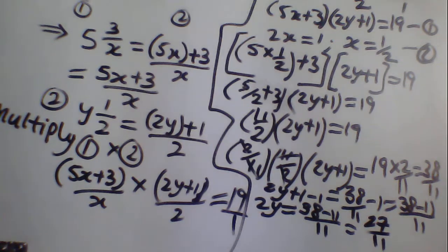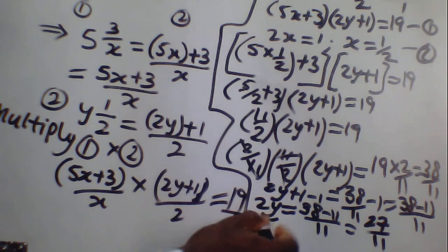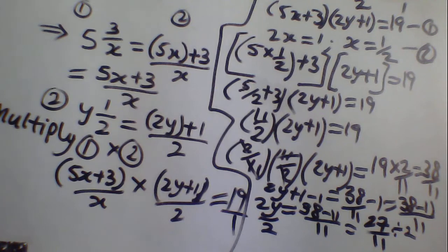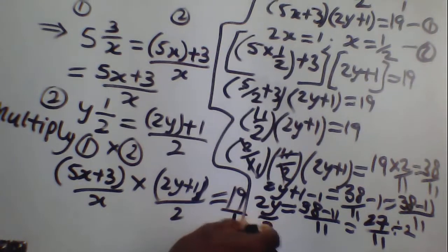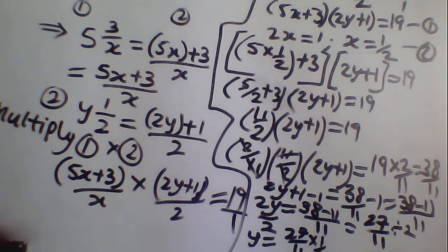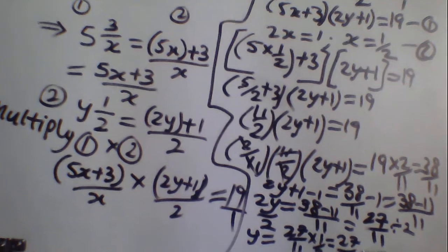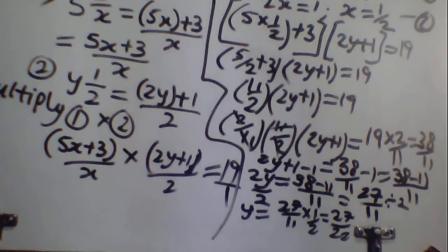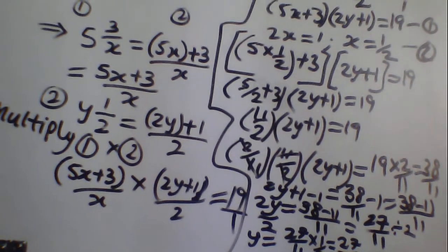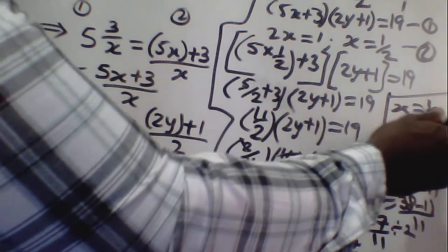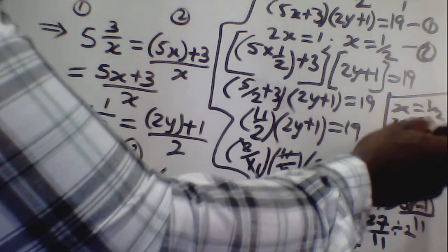Once you arrive at this point, you have almost solved it. Divide both sides by 2. So y will be equal to 27 over 11 times 1 over 2, which gives us 27 over 22. So y is equal to 27 over 22. These are the values of y and x — x is one half and y is 27 over 22.